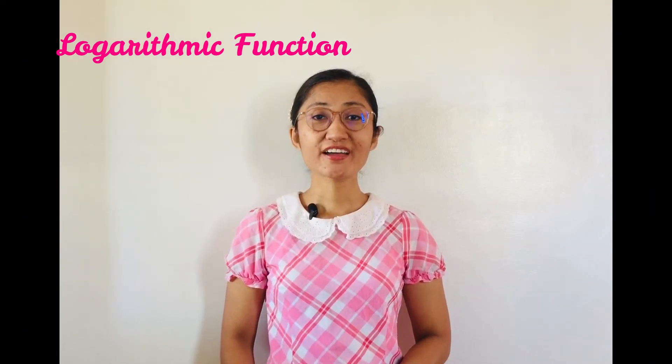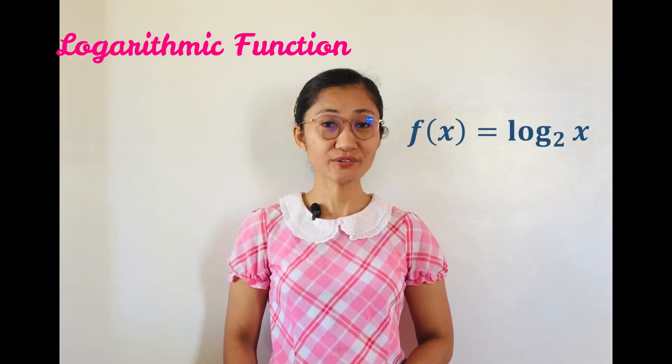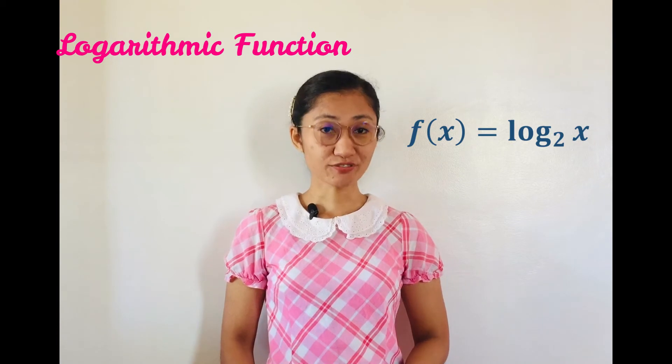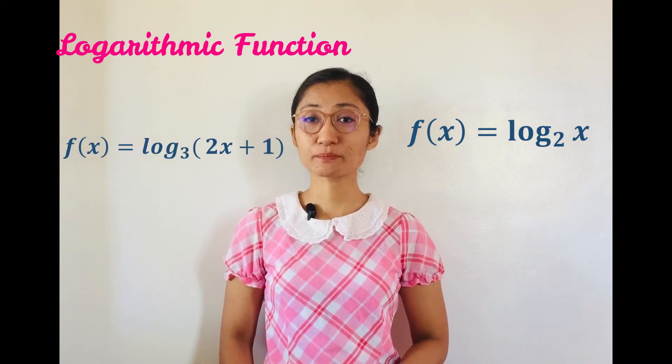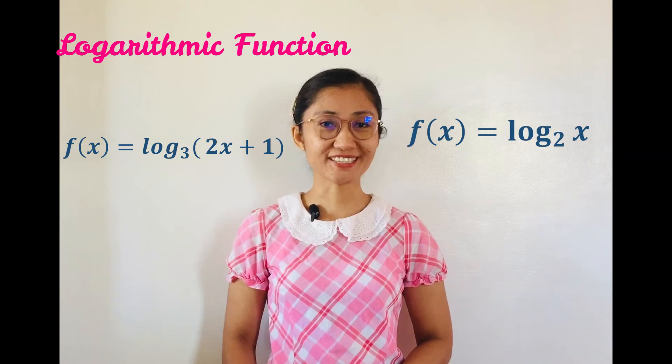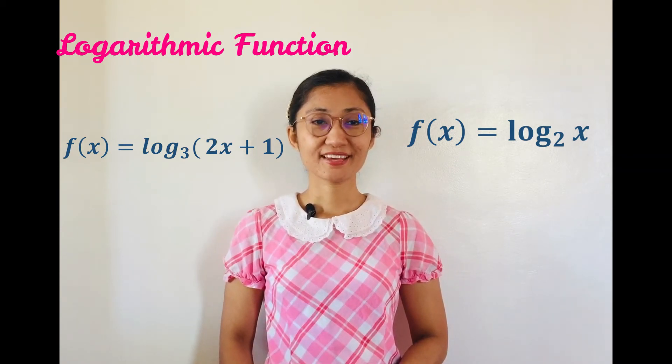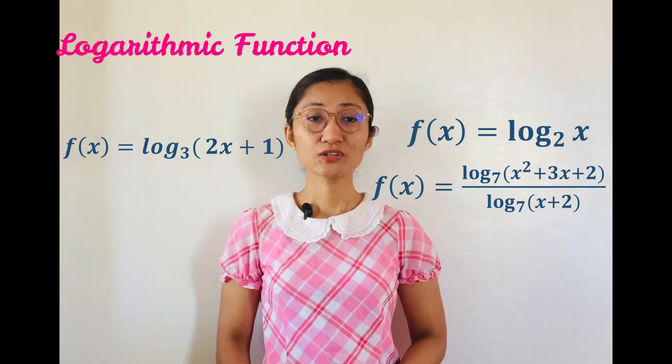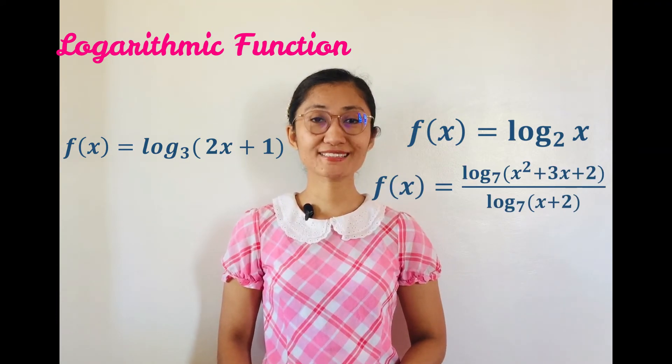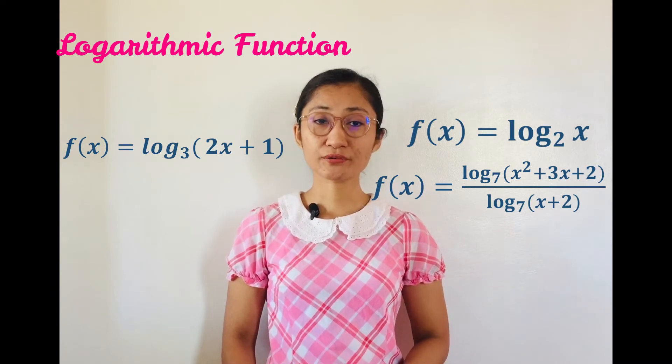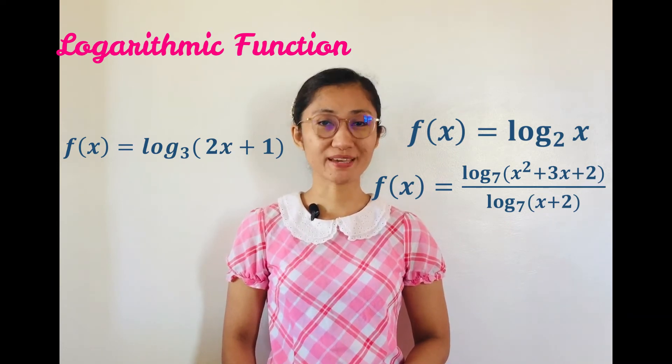Examples are f of x equals logarithm of x to the base 2, f of x equals logarithm of 2x plus 1 to the base 3, and f of x equals logarithm of x squared plus 3x plus 2 to the base 7 over logarithm of x plus 2 to the base 7.